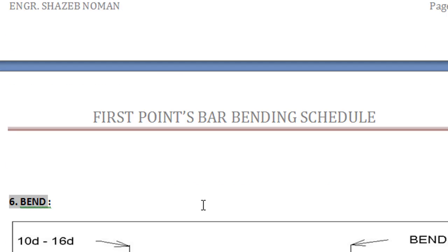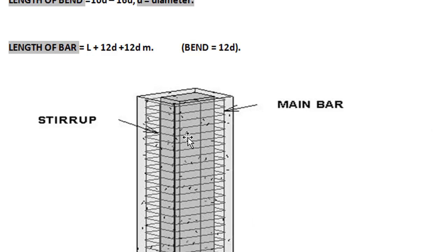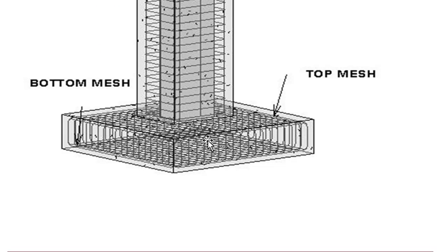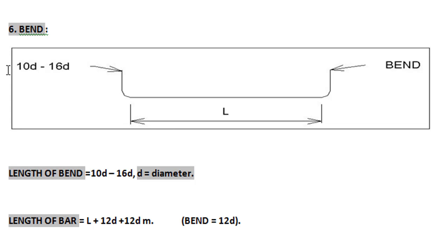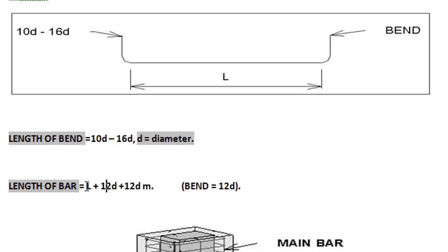The second shape is the bend, used in footing mesh. A footing has a top mesh and a bottom mesh. The bend value ranges from 10d to 16d, depending on the thickness or depth of the footing. For one bar with two bends of length L, the formula is L + 12d + 12d, taking the bend as 12d on each side.